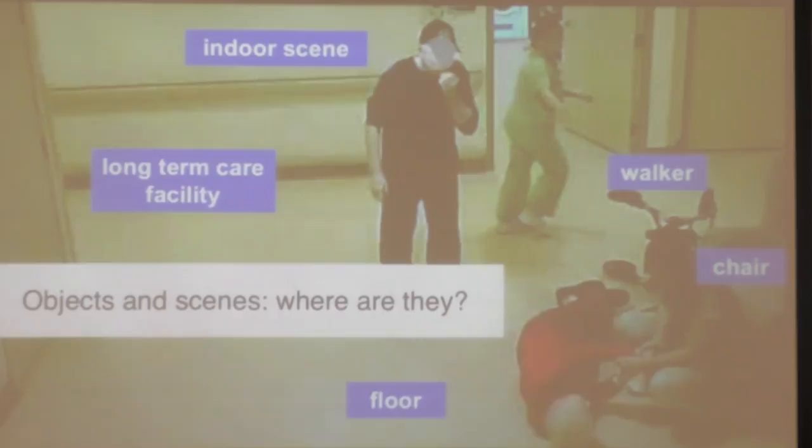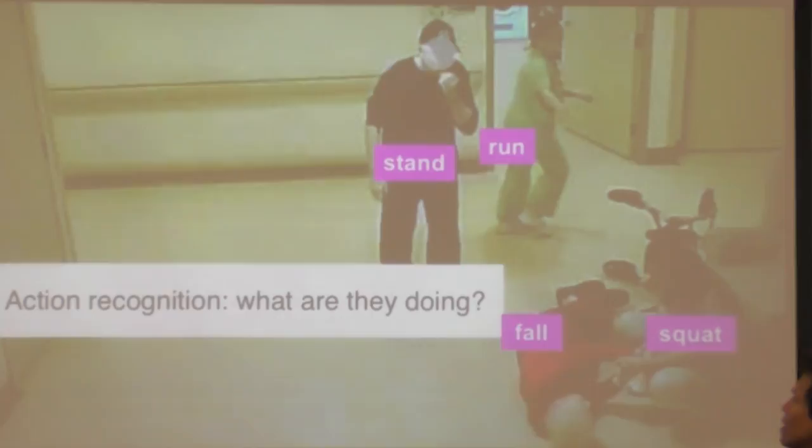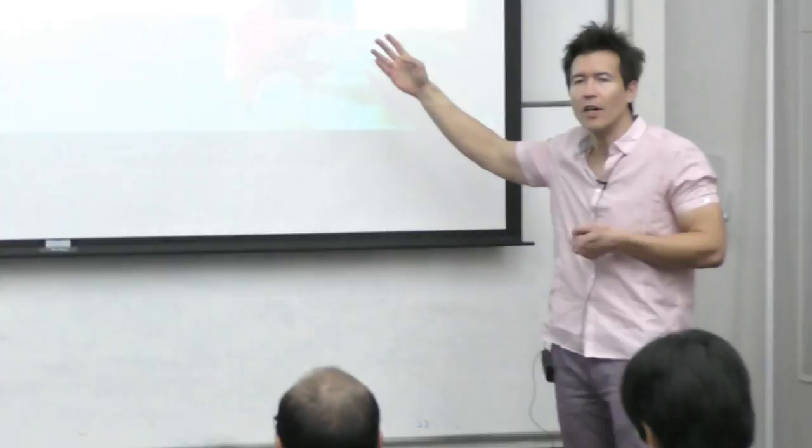For the people I detected, I'd also like to know individually what actions they're doing. The problem of action recognition is to put labels on people such as: that one is standing, that one is running, that one has fallen. Beyond that, I could ask why that person is running — well, she's running to go get help for the person who has fallen. Why is she squatting? She's squatting to comfort the person who has fallen. This sort of intention or social role is something we've worked on in previous work, trying to figure out why people do the actions they do.